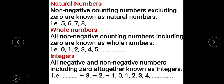The non-negative counting numbers excluding zero are known as natural numbers. If we include zero, the group is known as whole numbers. If we include all the negative and non-negative numbers along with zero, they all together form the group of integers.